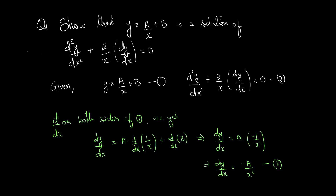If you are unfamiliar with this differentiation — d/dx of 1/x — you can simply use the formula d/dx of xⁿ = n · xⁿ⁻¹. Here n = −1, so d/dx of x⁻¹ = −1 · x⁻² = −1/x², which confirms our result.